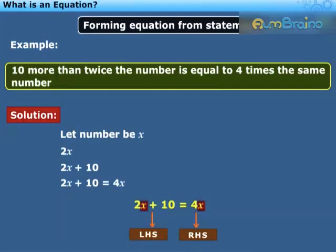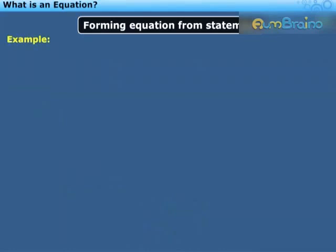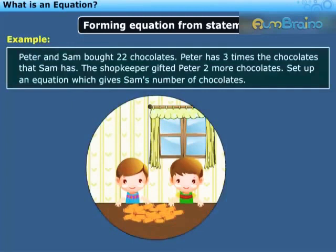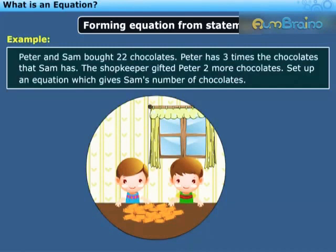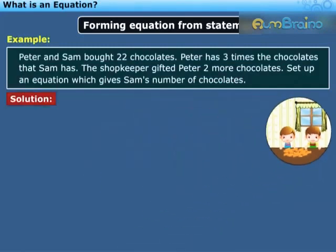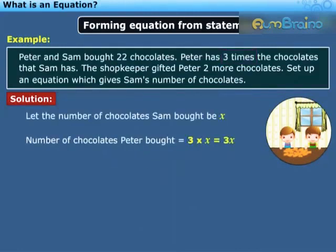Now we will consider a real life situation and set up an equation. Peter and Sam bought 22 chocolates. Peter has 3 times the chocolates that Sam has. The shopkeeper gifted Peter 2 more chocolates. Let the number of chocolates Sam bought be x. Peter bought 3 times the chocolates that Sam bought, hence the number of chocolates Peter bought is equal to 3x.